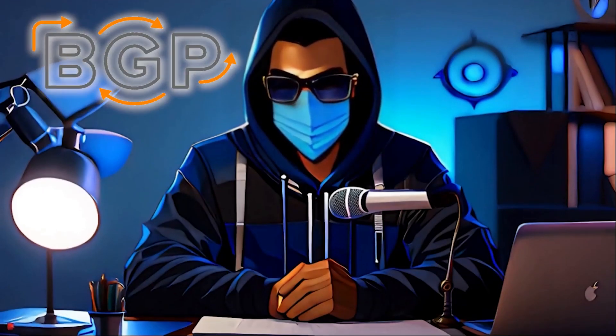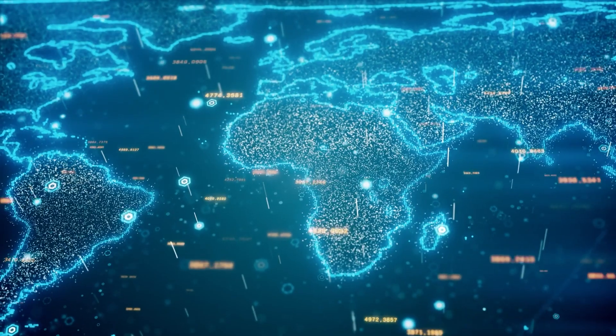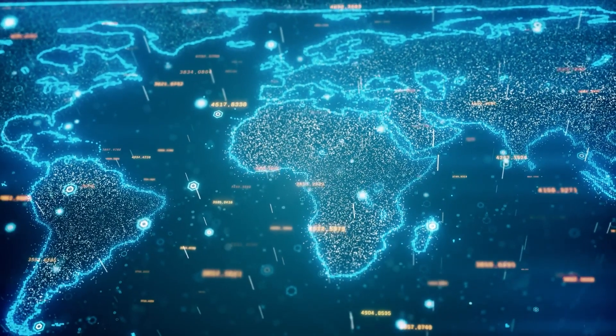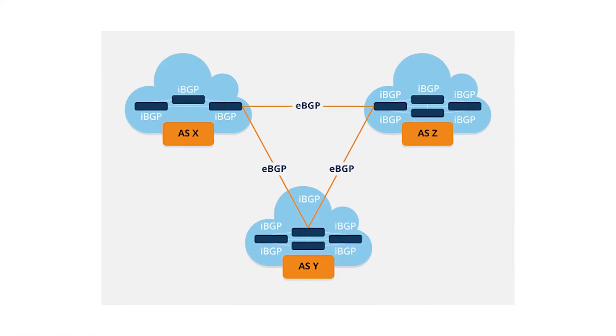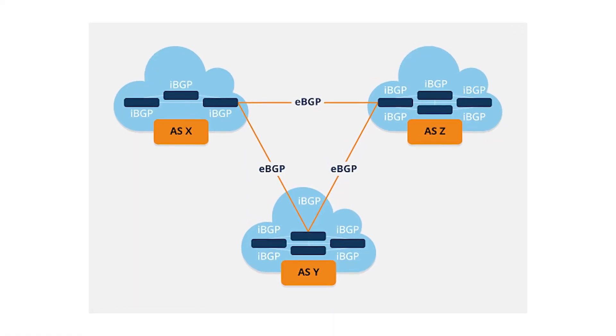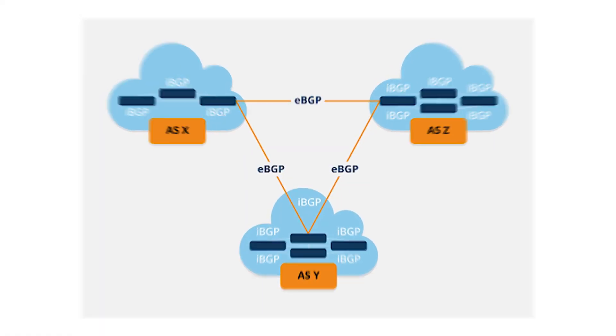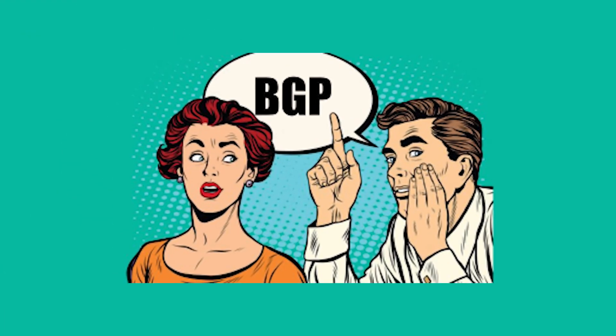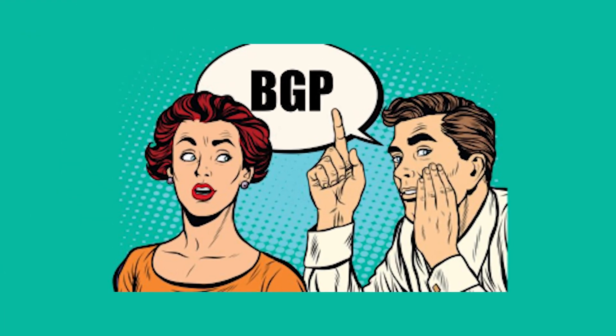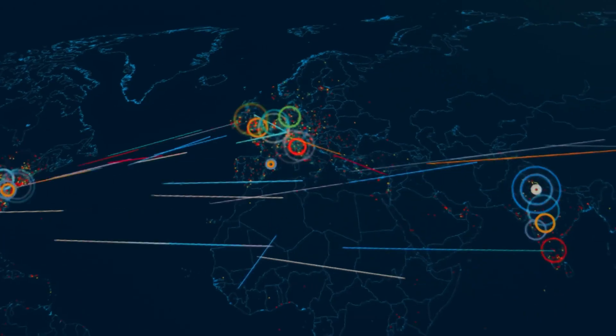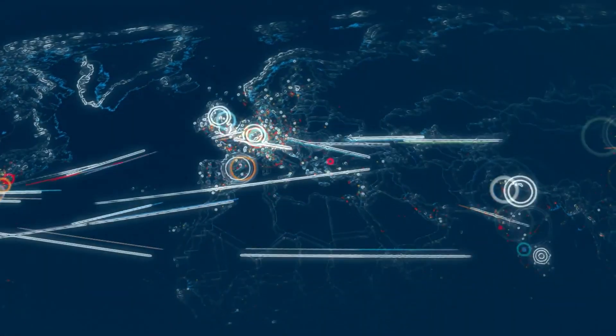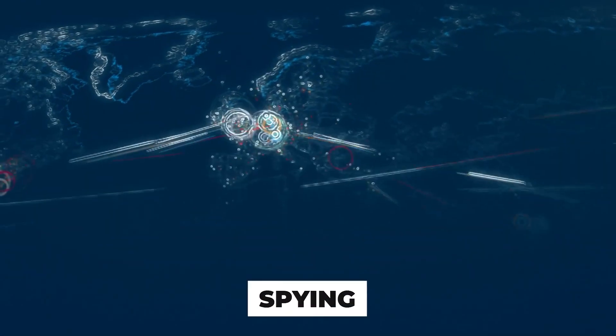Now, on to BGP — the internet's mapmaker, managing how data packets are routed between large networks. If someone messes with BGP, they can cause massive outages or redirect traffic for spying.